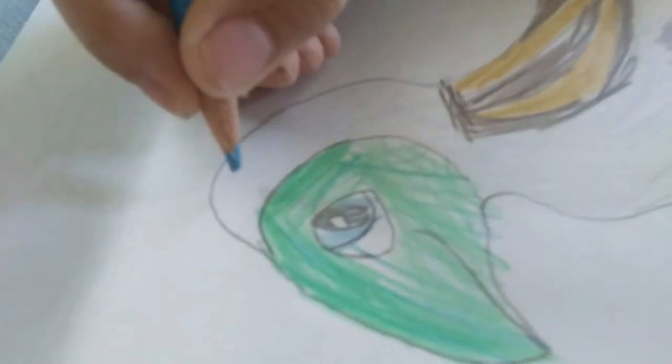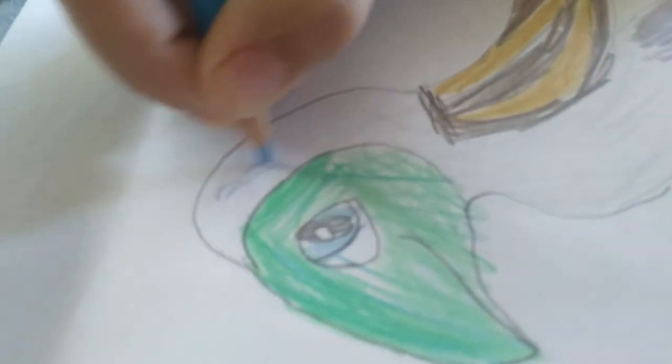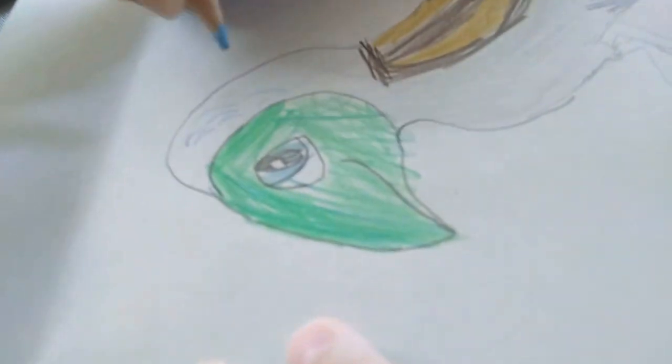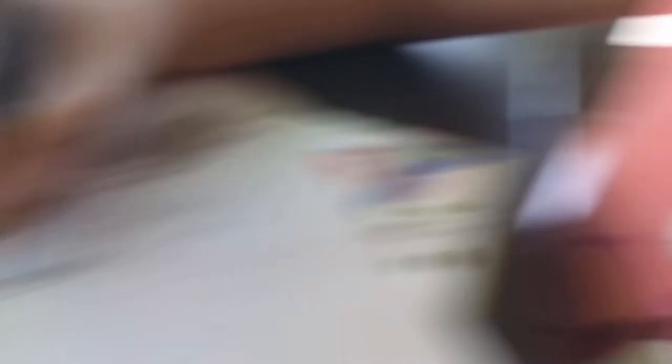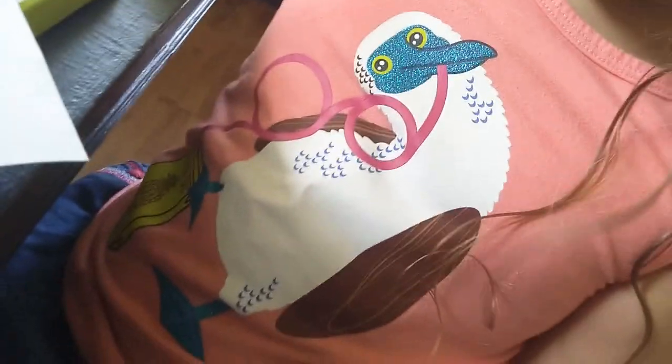It's almost done. I'm just going to draw some lines for feathers. Like on my shirt. My shirt has a blue-footed booby on it drinking pineapple juice.